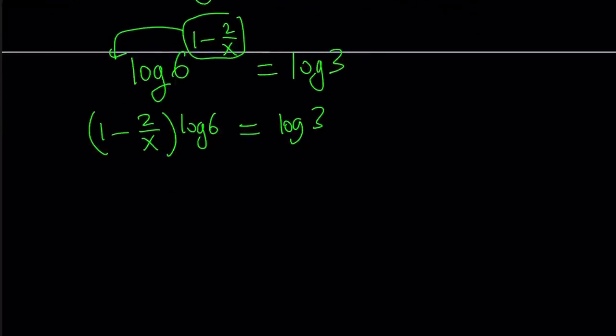Now we can go ahead and divide both sides by log 6 to get the x terms by itself. So we can kind of write it like this. My goal is to solve for x here. So let's go ahead and manipulate this a little bit. So we have log 3 over log 6, right?